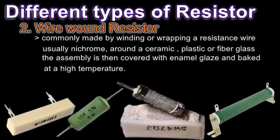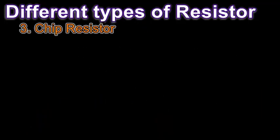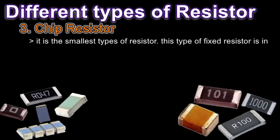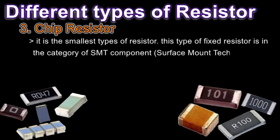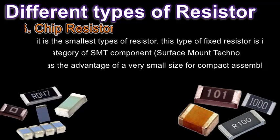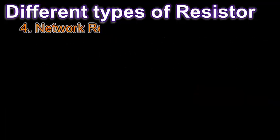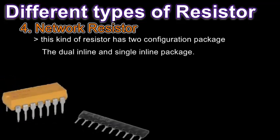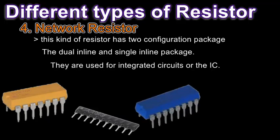Another type is the chip resistor. When we say chip, that means a small piece, and of all resistor types, this is the smallest. This type of fixed resistor is in the category of SMT — Surface Mount Technology. It has the advantage of a very small size for compact assemblies. Number four is the network resistor, which has two configuration packages: the dual inline package and the single inline package. They are used for integrated circuits (ICs).